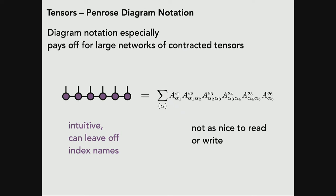For a matrix product state or tensor train, the traditional notation has a lot of summed indices and is hard to parse at first glance. In diagram notation you immediately see it's a chain of tensors, each with three indices, with a linear or tree-like (loop-free) topology. It's called 'tensor train' in the math community — like a train where the carriages are tensors.